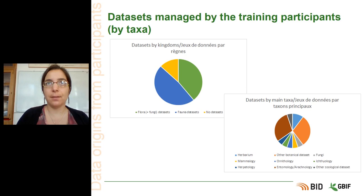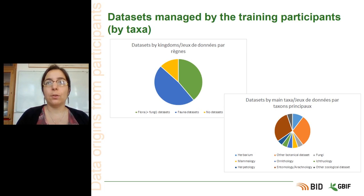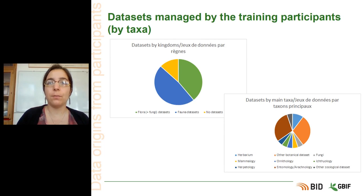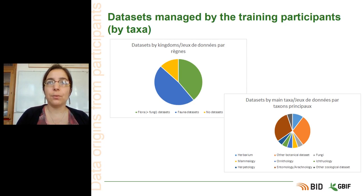On these two graphs, we can see how the data in these datasets are classified by taxa. A lot of datasets are fauna datasets. The other main parts are flora and fungi datasets, and a few of the participants did not bring any datasets.